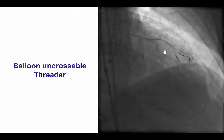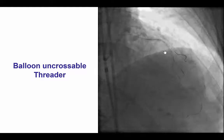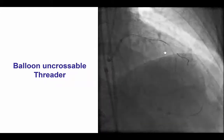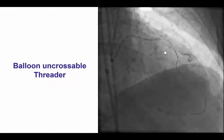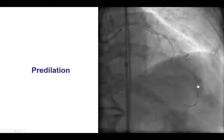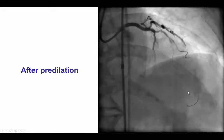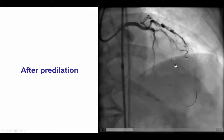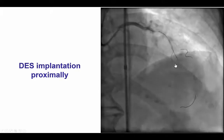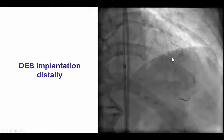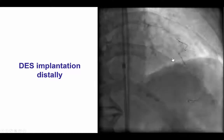The lesion could not be crossed with the microcatheter, but once we did dilation with the threader balloon, we were then able to deliver the Turnpike LP distal to the distal cap into the distal true lumen. After switching to a workhorse wire, we did dilate the entire occlusion. There is of course a lot of dissection in both planes. We then placed a stent within the mid-LAD and then one more in the distal LAD, covering all the area of dissection.